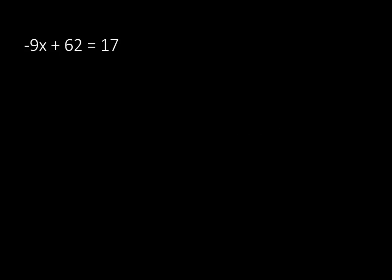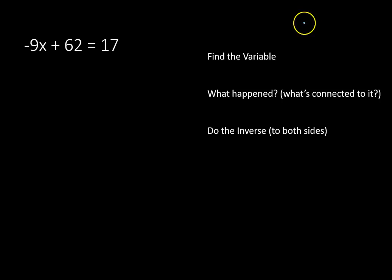Let's look at another one. This one here starts out with a negative in the equation: negative 9x plus 62 is equal to 17. Let's find that variable. Our variable is x. What's connected to there?